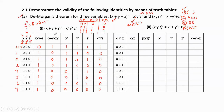Checking the LHS and RHS columns, these two values are the same. Therefore we can say the first identity — De Morgan's first theorem — is satisfied.